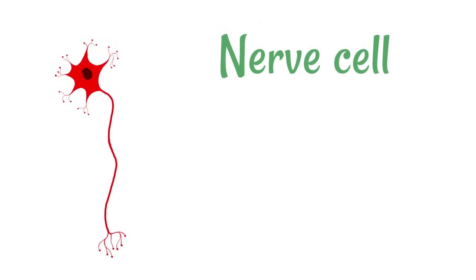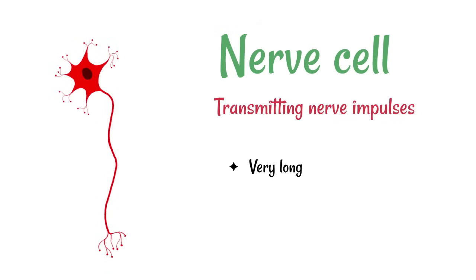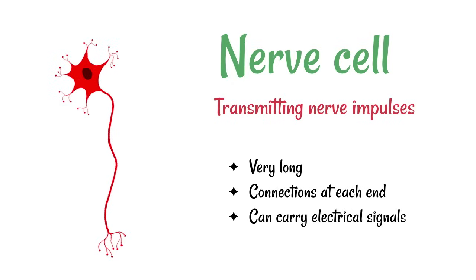Nerve cells are responsible for transmitting nerve impulses. These are very long so they can take information over long distances through the body. They have got connections at each end so they can connect up to the receptors or to the next nerve cell, and they can carry electrical signals.